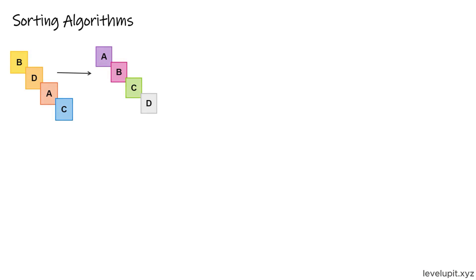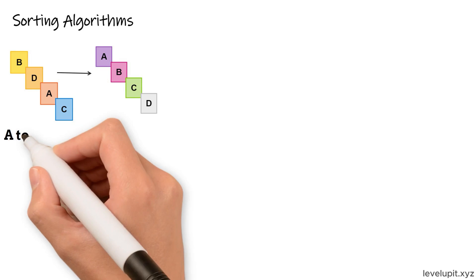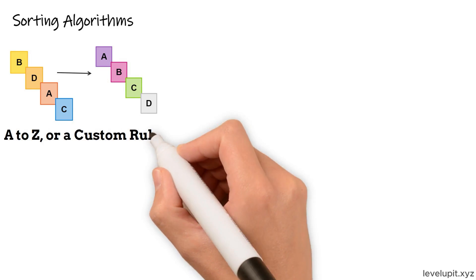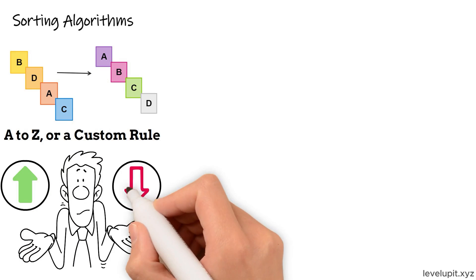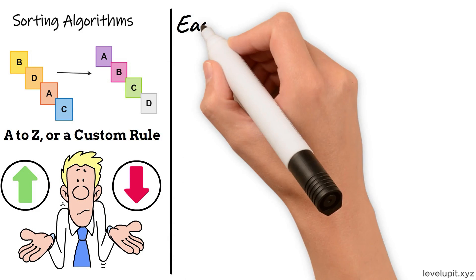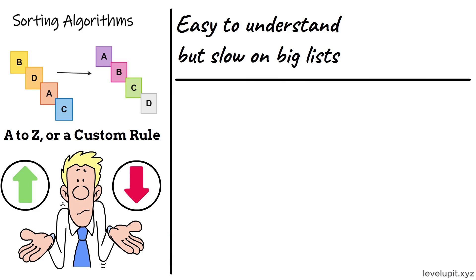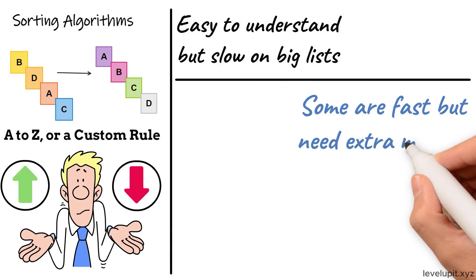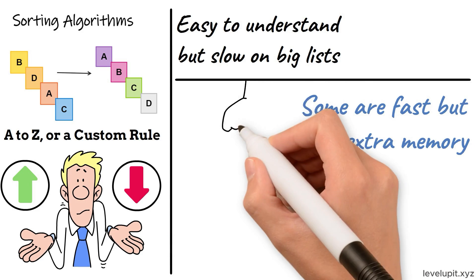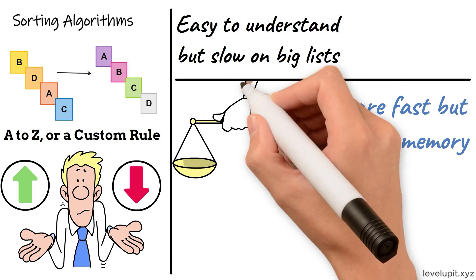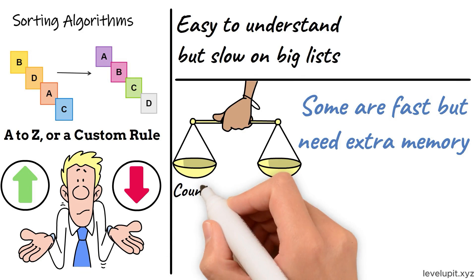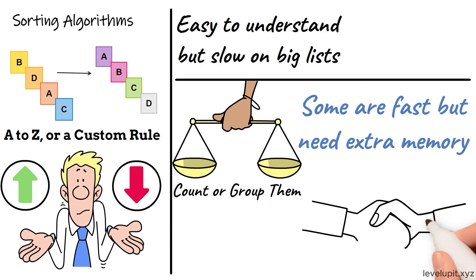A sorting algorithm is simply a method for arranging items in a list into a desired order: smallest to largest, A to Z, or a custom rule. Different methods have different strengths. Some are easy to understand but slow on big lists. Some are fast but need extra memory. A few do not even compare items; they count or group them in clever ways. We will build intuition with tiny concrete examples you can picture immediately.